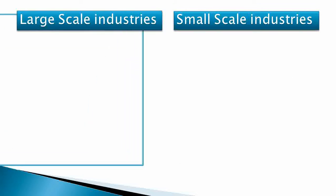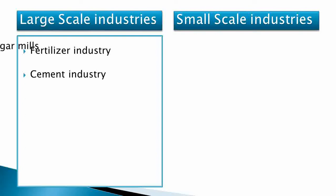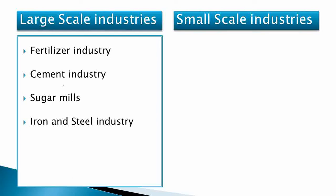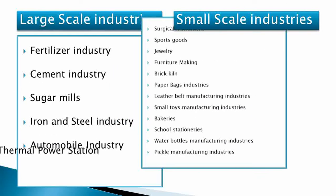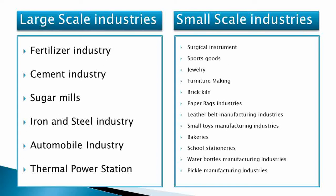You should make a list of large scale industries: fertilizer, cement industry, sugar mills, iron and steel industry, automobile industry, and thermal power stations. For small scale industries: surgical instruments, sports goods, jewellery, furniture making, brick and paper bag industries, leather belt manufacturing, small toy manufacturing, bakery, school stationery, water bottle manufacturing, and pickle manufacturing industries. Prepare this list of examples for both small scale and large scale industries of Pakistan.